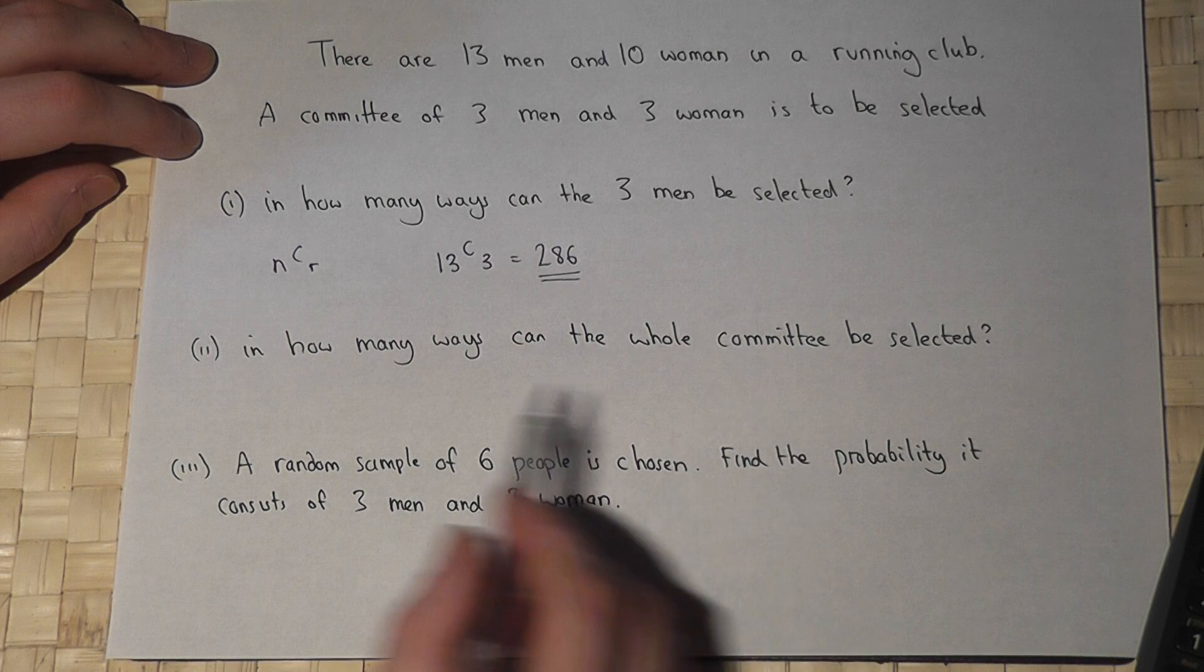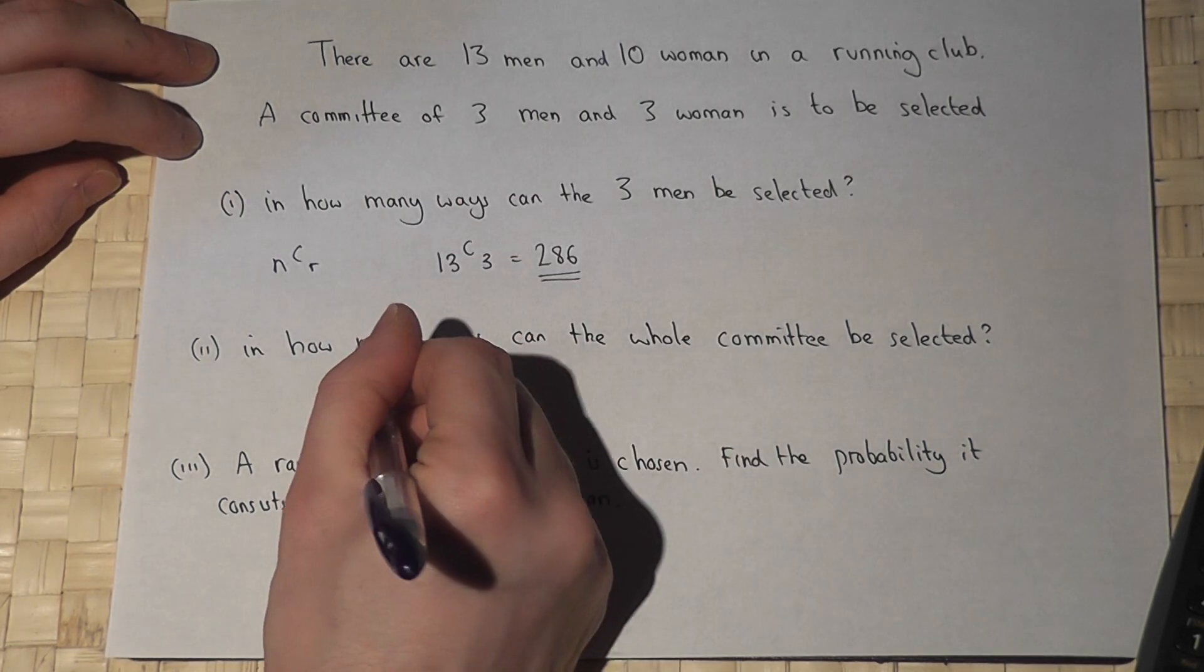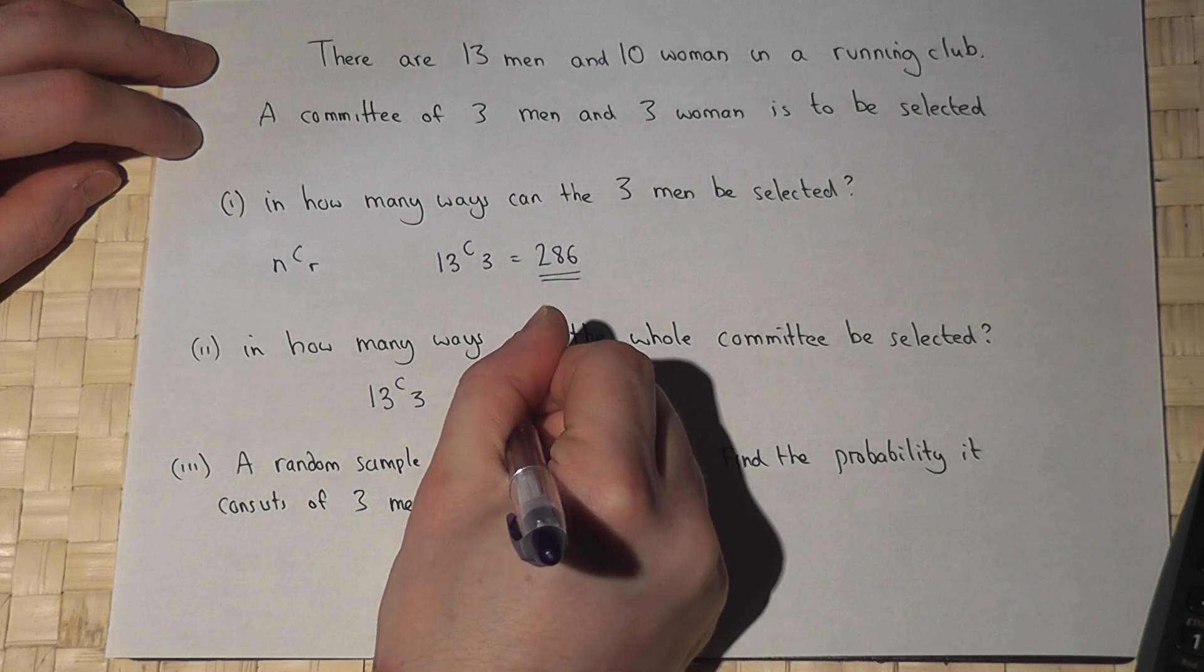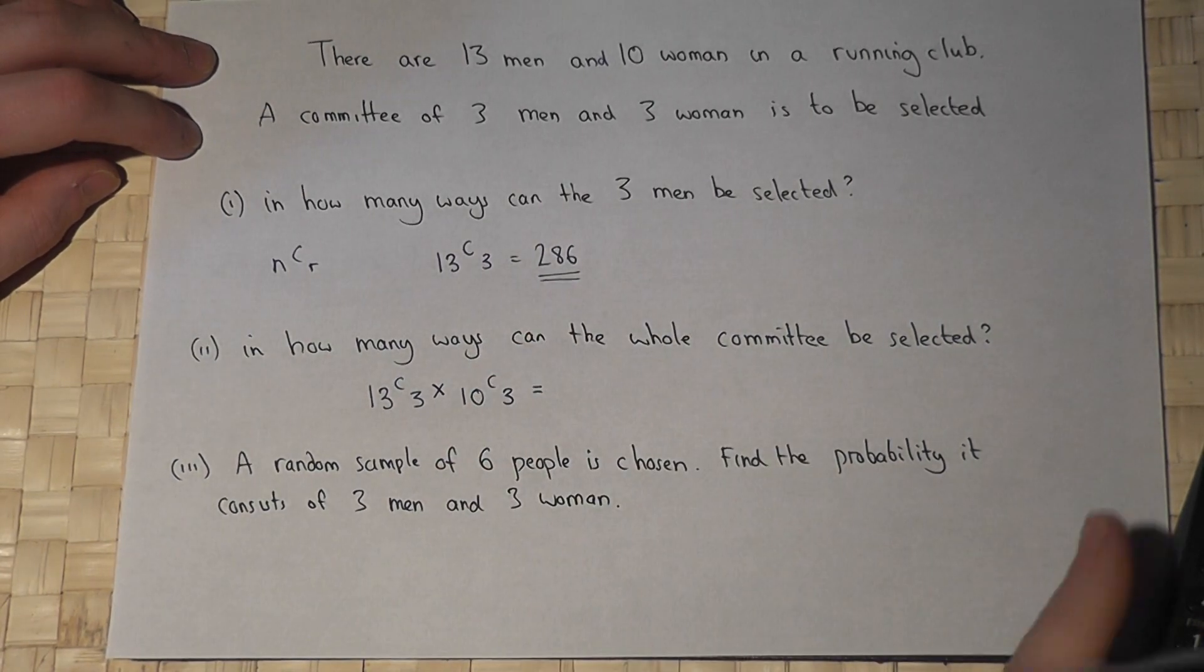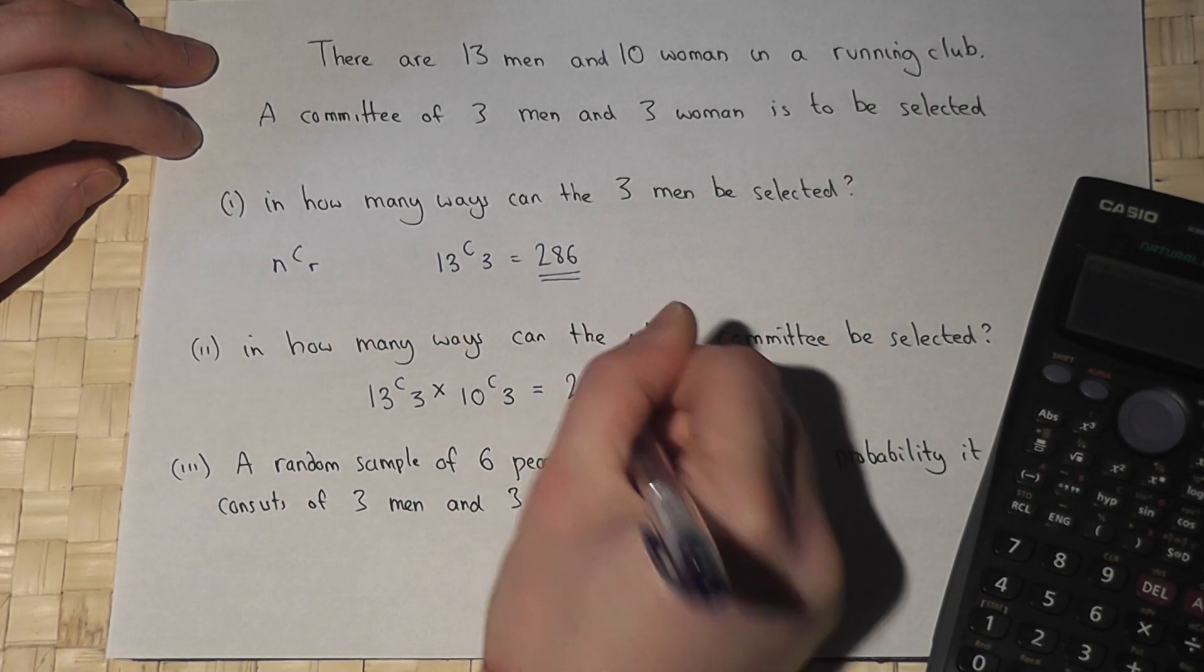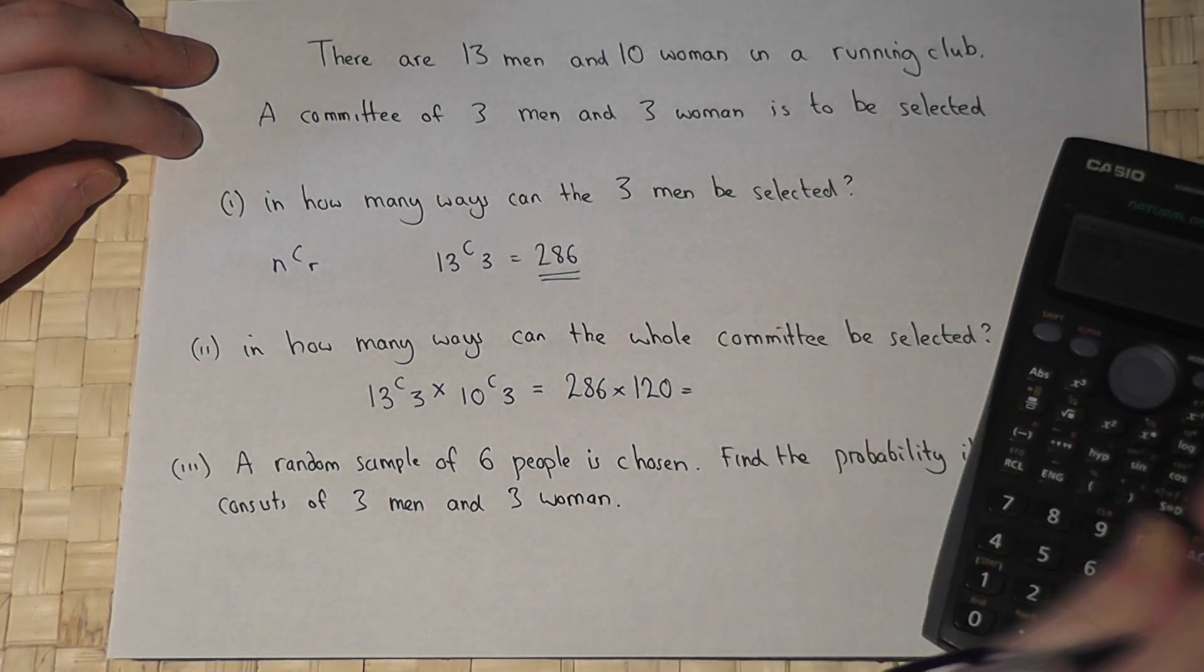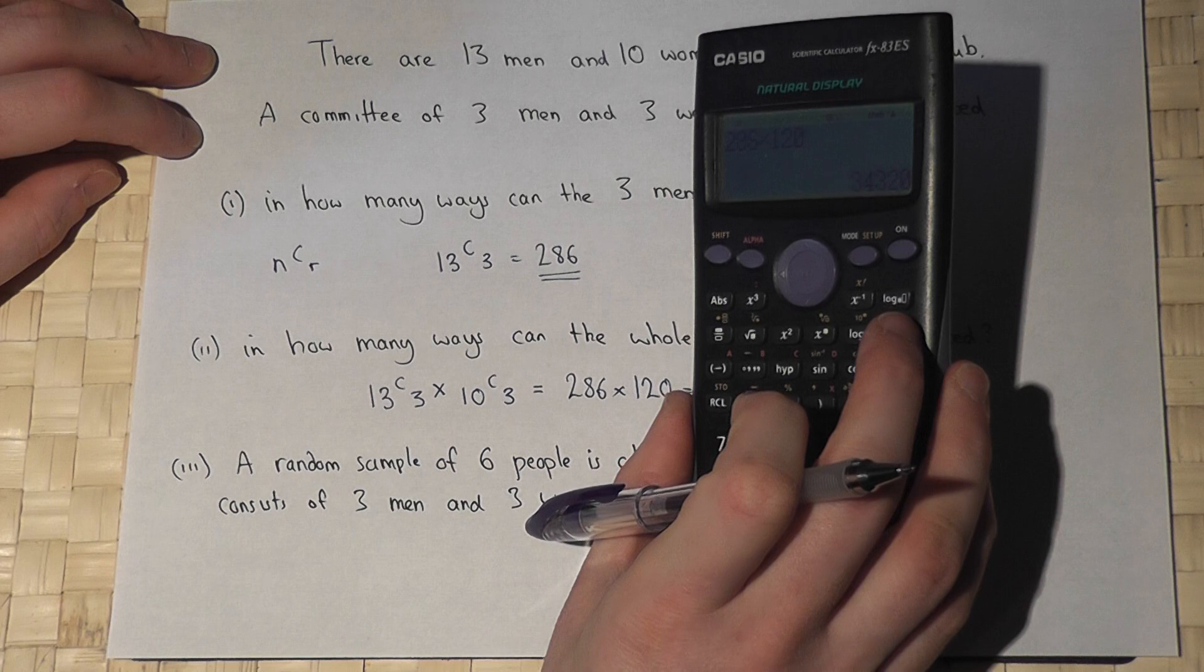In part two, we're asked how many ways can the whole committee be selected. We want three men out of 13, that's 13C3, and three women out of 10, that's 10C3. We multiply these two numbers together to find the overall number of combinations. 13C3 was 286, 10C3 is 120, and 286 times 120 equals 34,320.